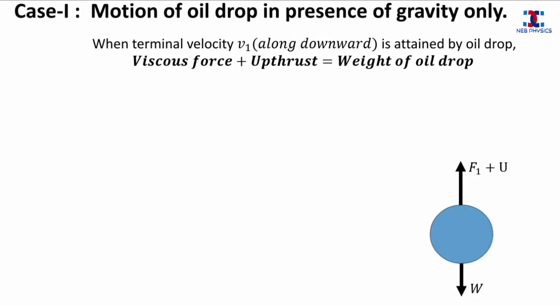There are three types of forces acting on it: the viscous force and the upthrust of air acting upward, whereas the weight of the droplet is acting downward. When the droplet falls with a uniform velocity v1, also called terminal velocity, the upward force must equal the downward force, so we can write: viscous force plus upthrust equals weight of the oil drop.